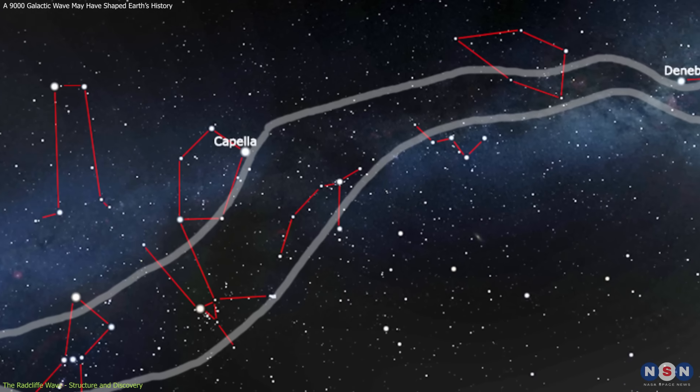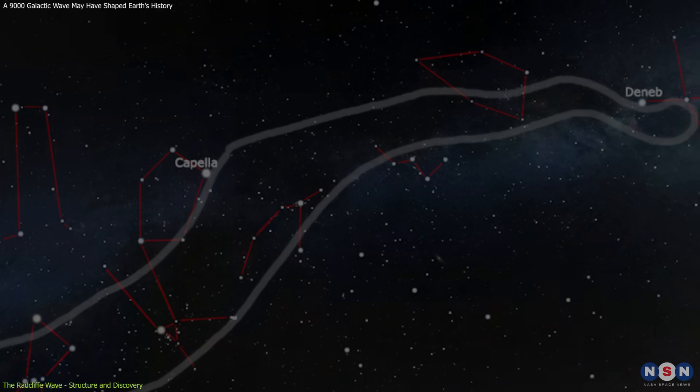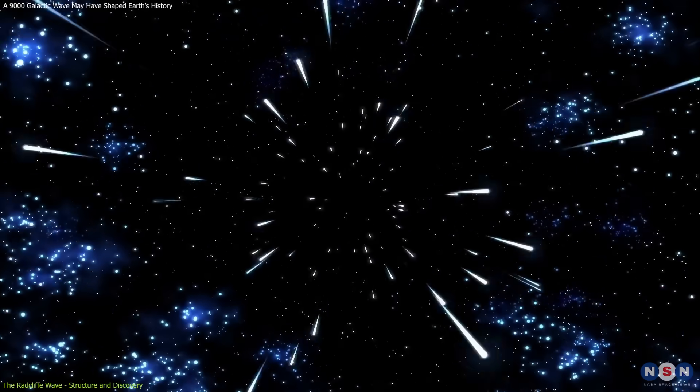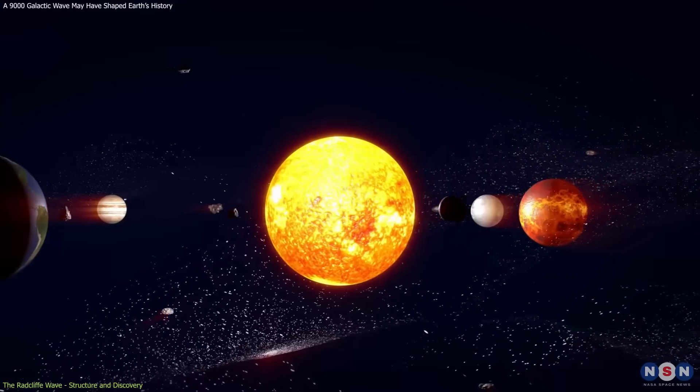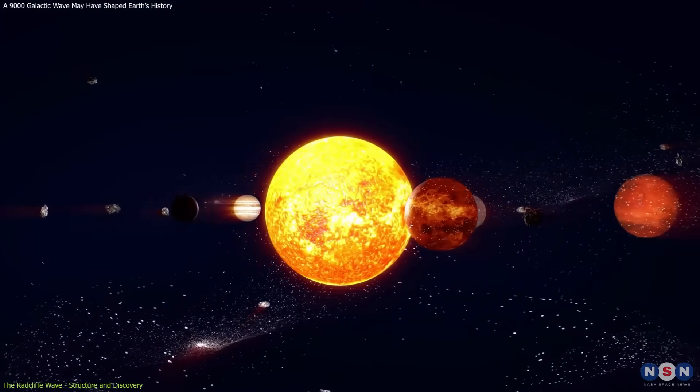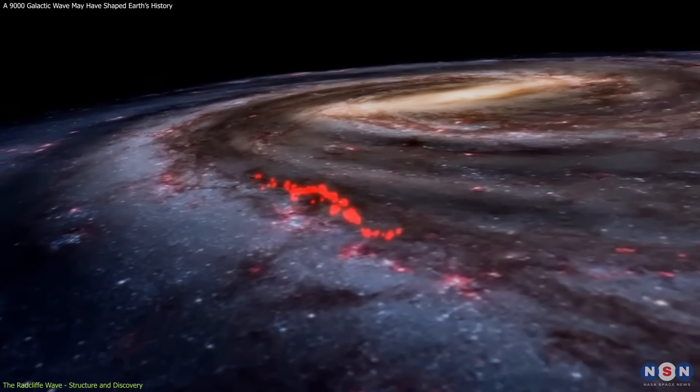These include Orion, Taurus, and Perseus. It is located just about 500 light-years away from our solar system at its closest point, making it an essential feature of our galactic neighborhood.